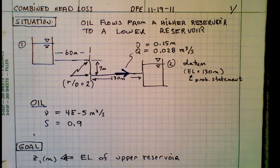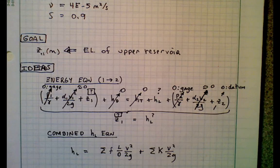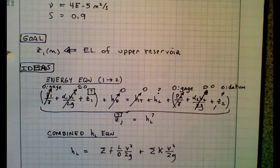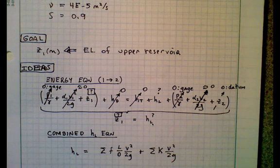The situation and goal are documented here in the usual way. Since a goal is elevation of the upper reservoir, we start with the energy equation, term-by-term analysis. The reduced equation is that the elevation at the upper reservoir is equal to the head loss in the system.